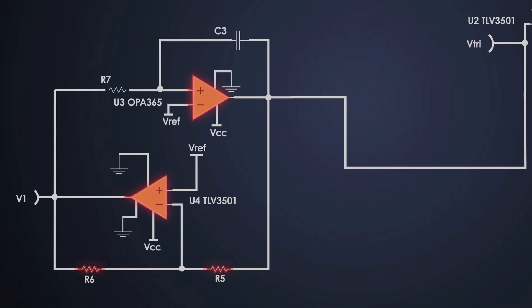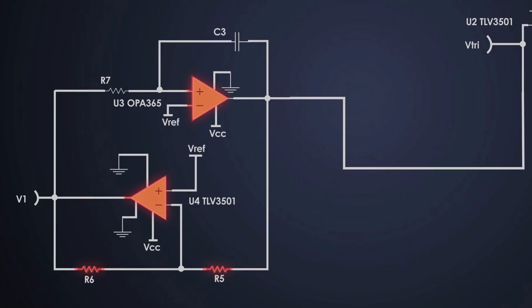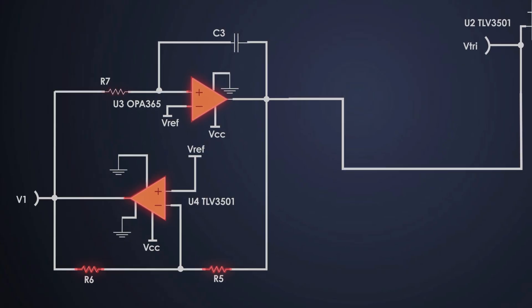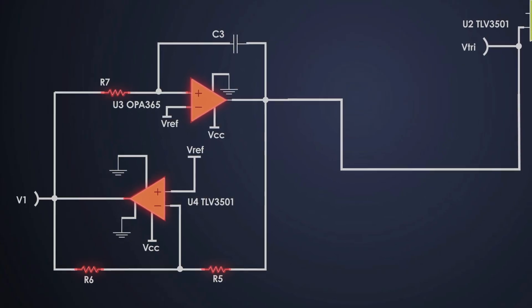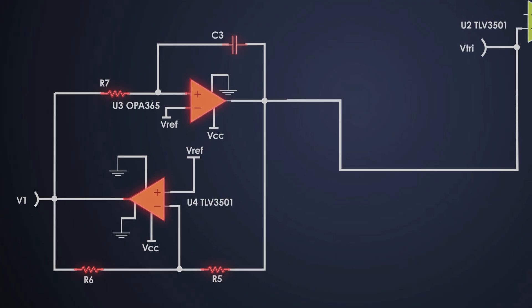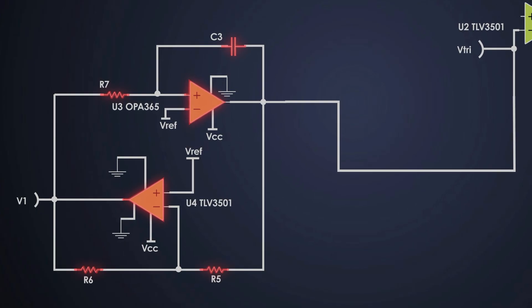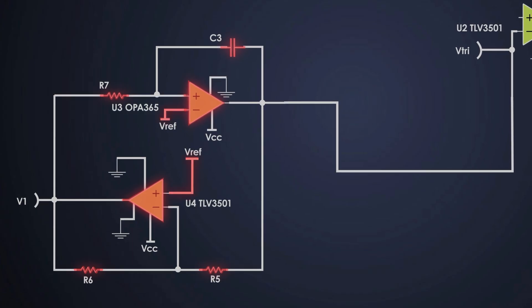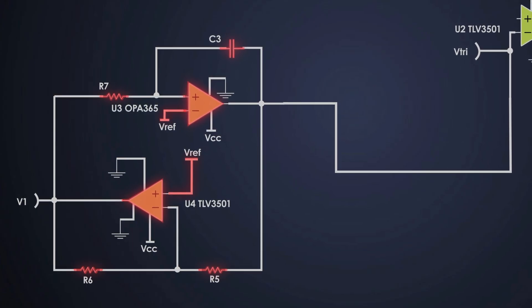Resistors R5 and R6 define the ramp-up or ramp-down rates. R7 is the feedback resistor for U3. And capacitor C3 is the integrator capacitor and this VREF is the reference midpoint for oscillation.